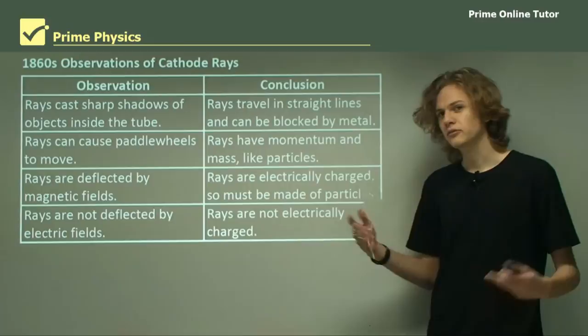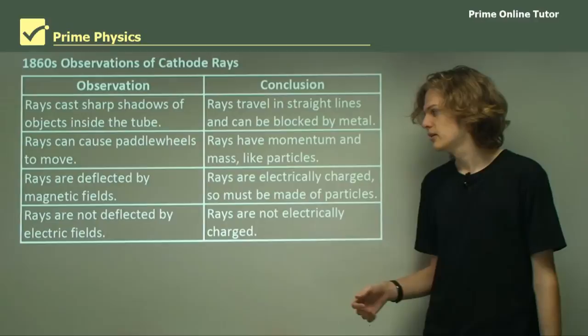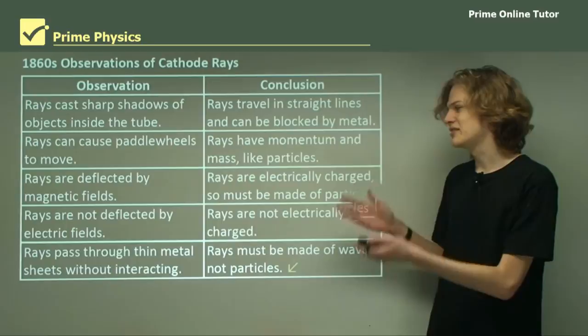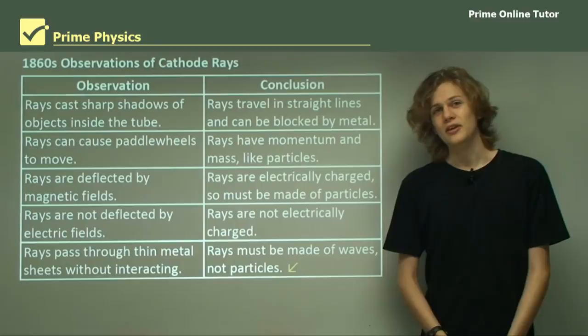Rays were not deflected by electric fields, and that meant, the scientists thought, that the rays could not be electrically charged. Otherwise, they would have been deflected. And the rays passed through thin metal sheets without interacting, which meant that the rays must be made of waves and not particles. And so scientists couldn't quite understand what was going on with cathode rays. But we'll learn more about that in the next talk. So this ends the theory.